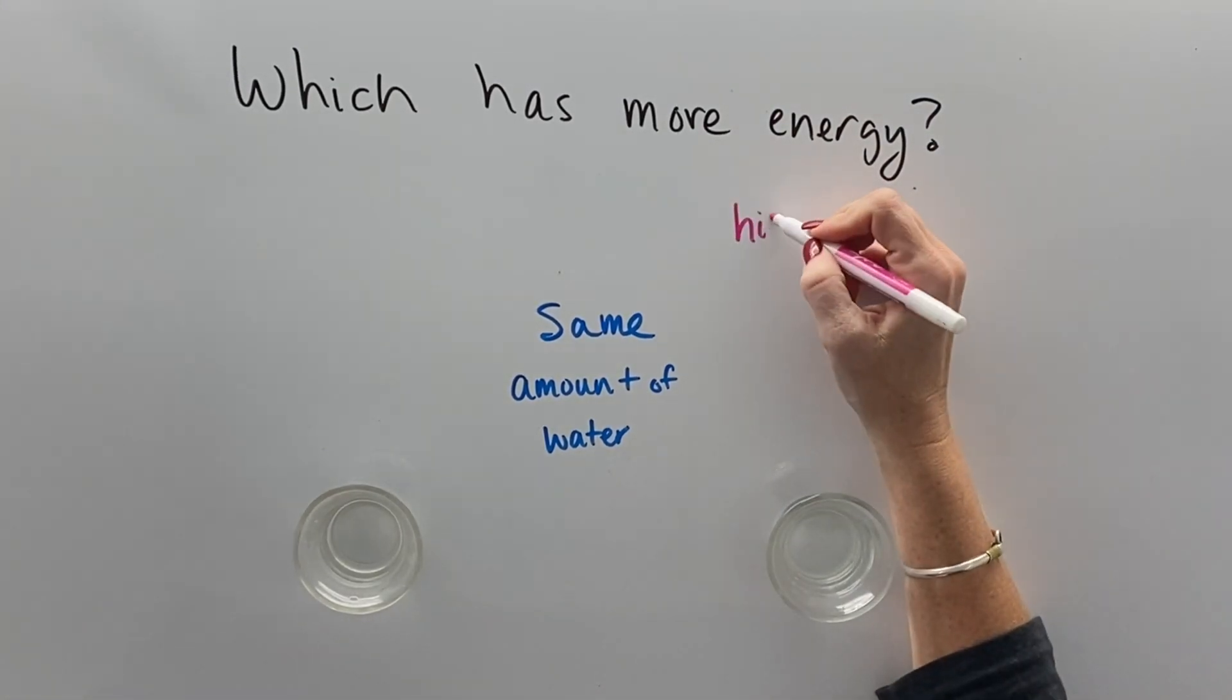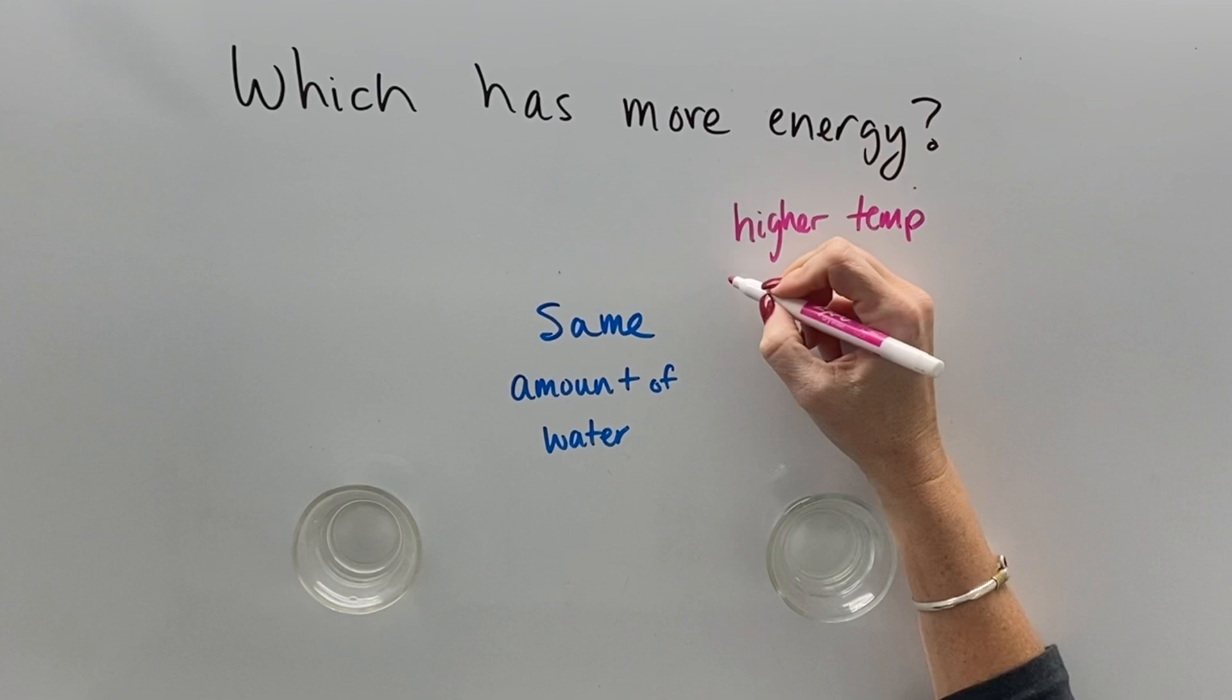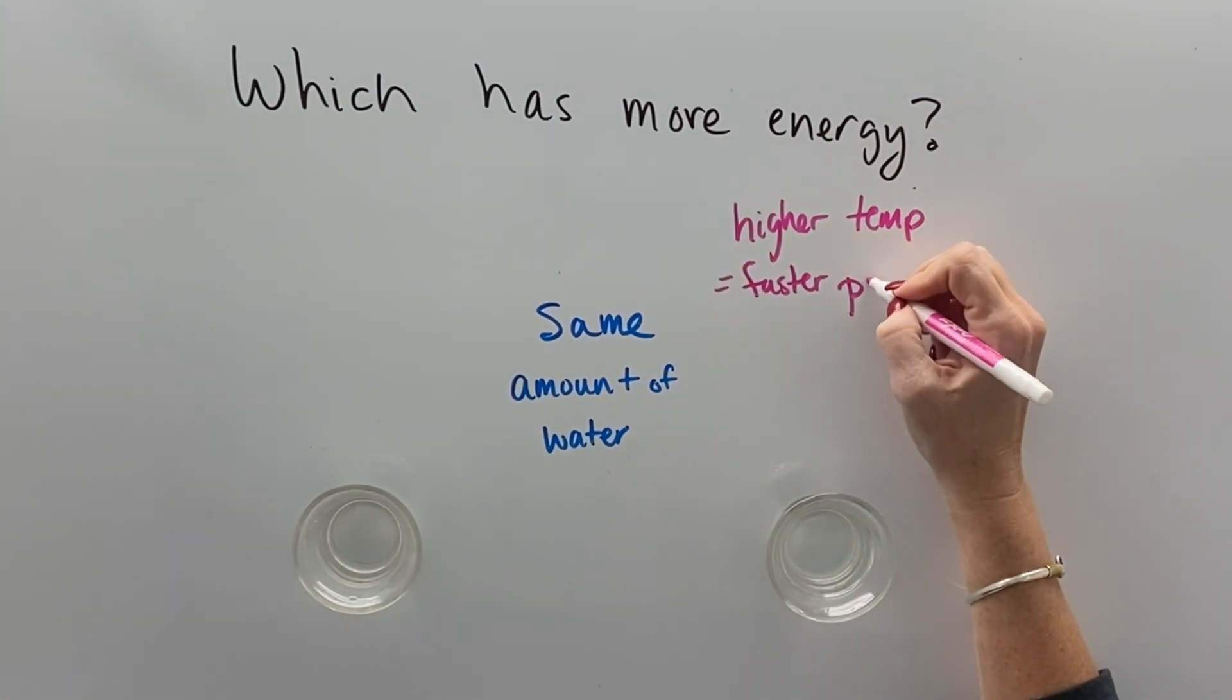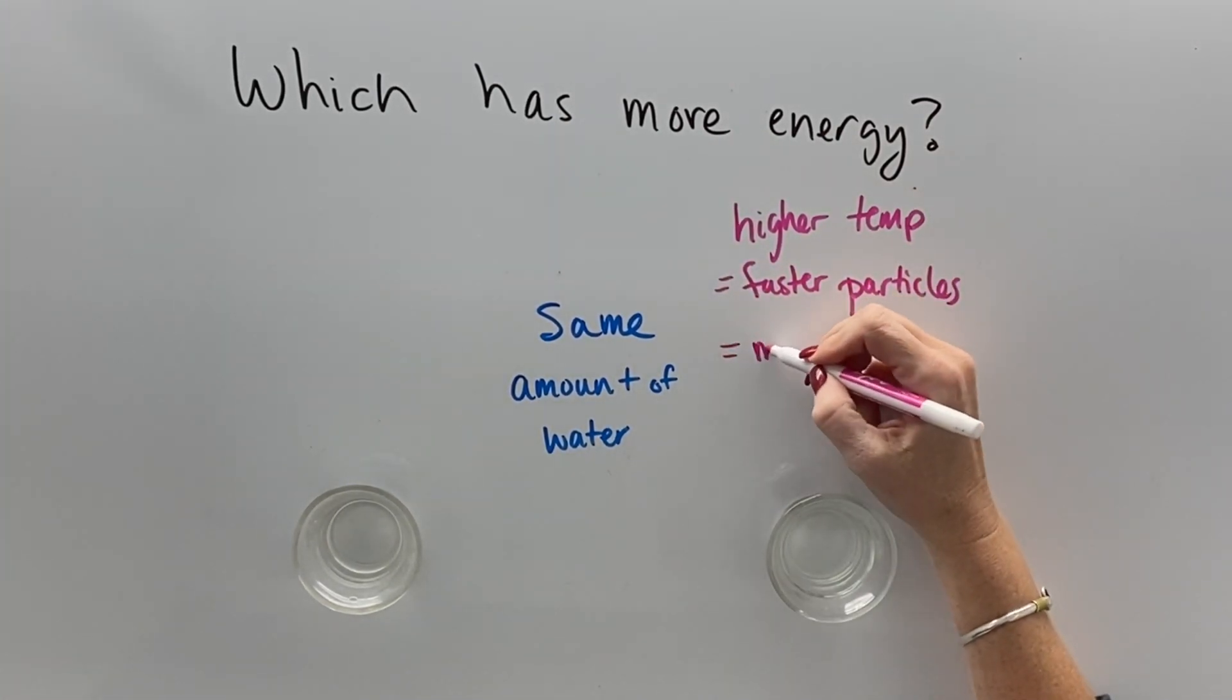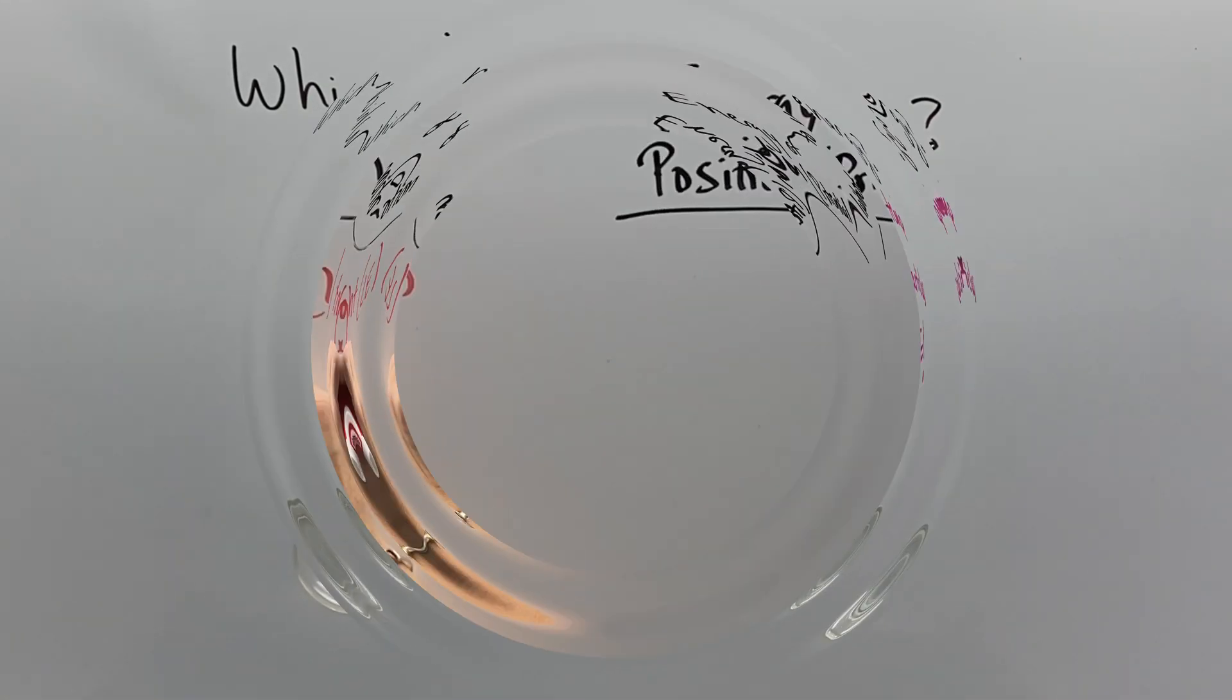If you have two containers that have drastically different temperatures, obviously then the one that has the higher temperature is going to have particles that are moving faster and have more heat energy, as long as it's the same amount of water.